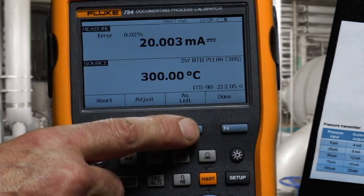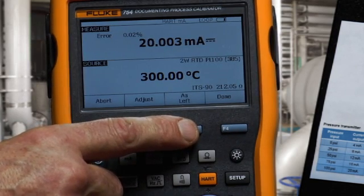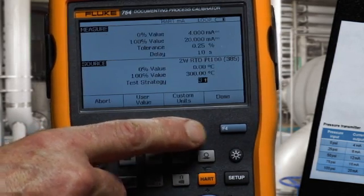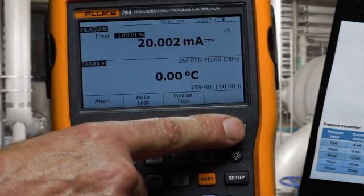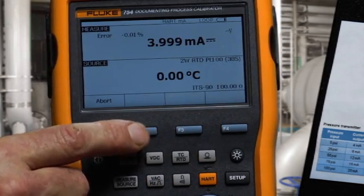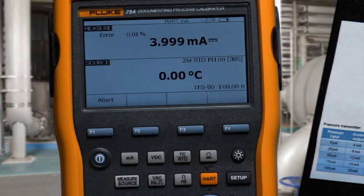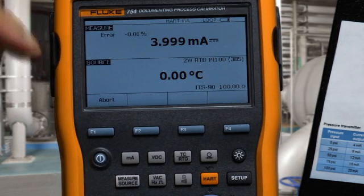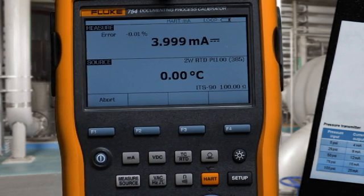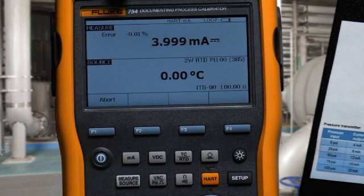Next, we need to document the post-adjustment condition of the transmitter as left. And we'll automatically record and document those results. Applying the 0% value, measuring the milliamp current, and calculating error percent of span.